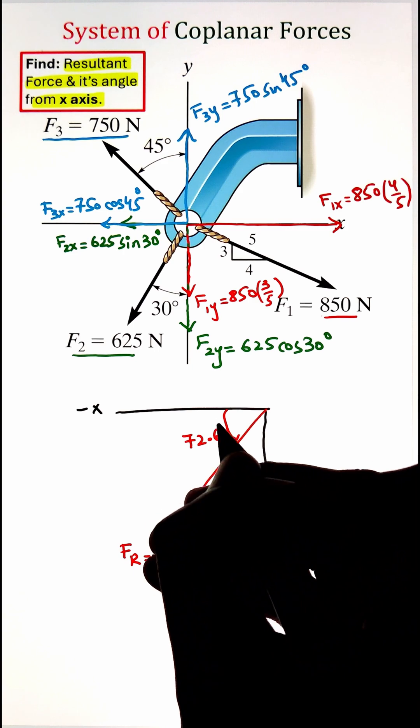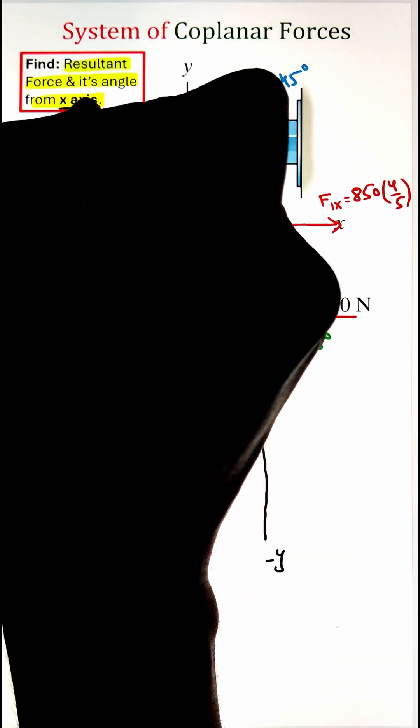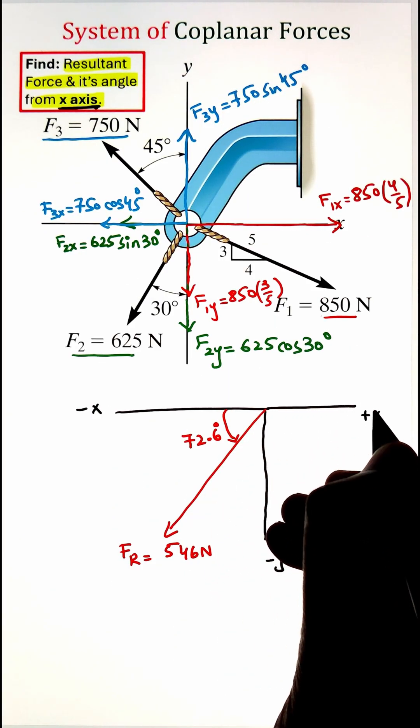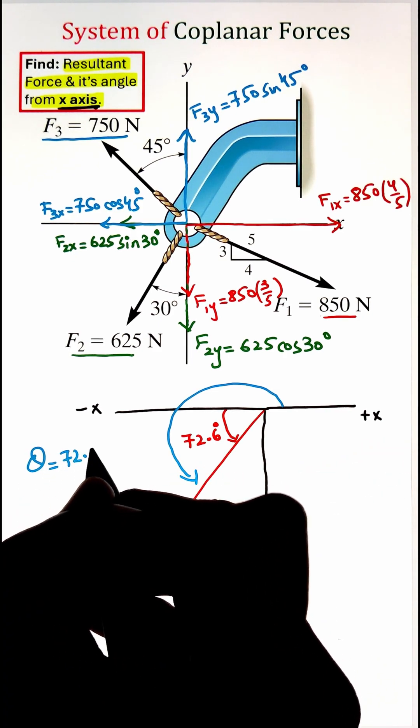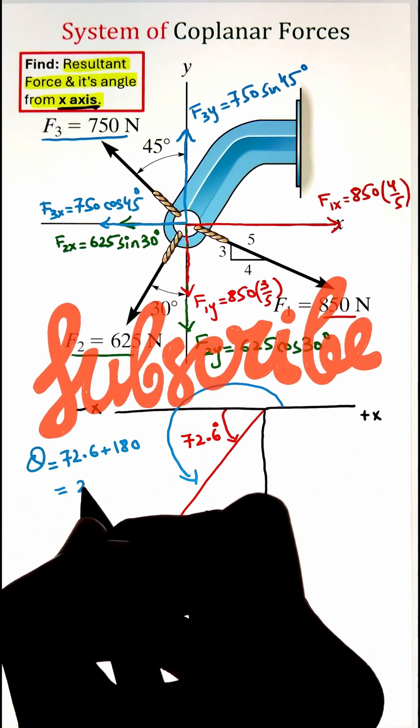Now, in the question, they are asking us to calculate the angle from the positive x-axis. So, adding 180 to 72.6 gives us our final angle that is coming 253 degrees.